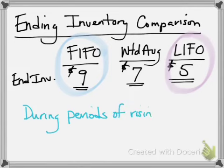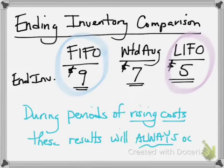During times of rising costs, the income statement under FIFO is going to show higher profit and the LIFO statement is going to show lower profit — that will always happen during periods of rising costs. Likewise, during periods of rising costs, the FIFO balance sheet value for inventory will be higher than the LIFO balance sheet value. That will always happen. If it was a period of decreasing costs, where costs were falling over time, then the results would be reversed.